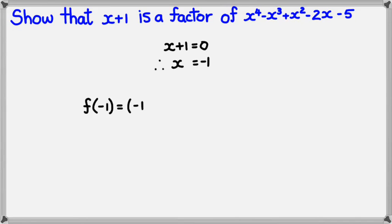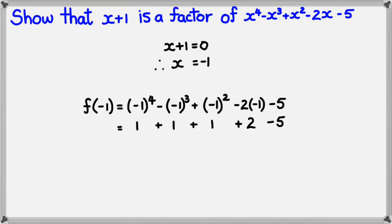f(-1) would equal (-1)^4 - (-1)^3 + (-1)^2 - 2(-1) - 5. Simplifying this, we should get 1 + 1 + 1 + 2 - 5. Adding this up, it equals 0.